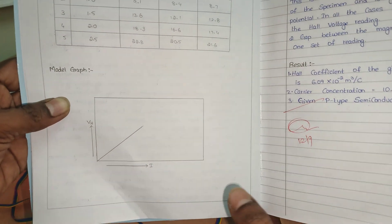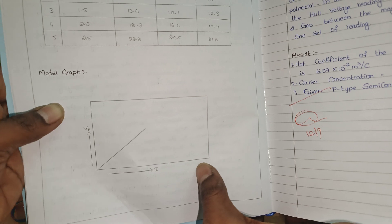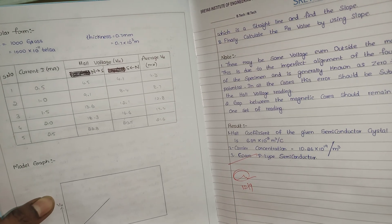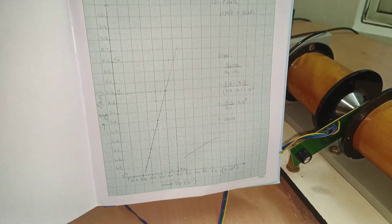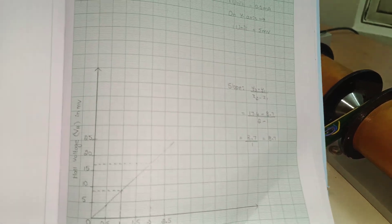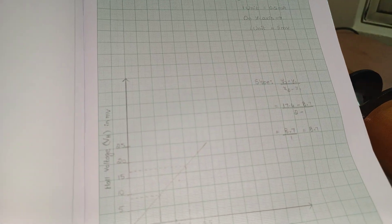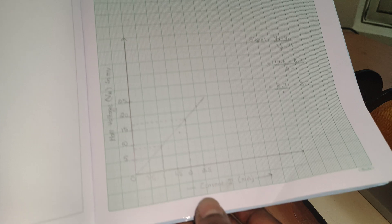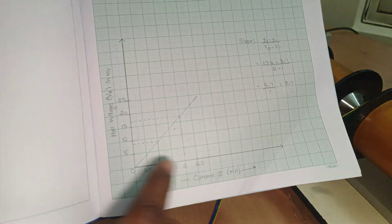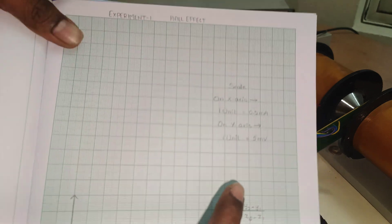This is the model graph. Here current we have to take on x-axis, Hall voltage on y-axis. Now I will show you the graph. This is the graph of Hall voltage versus current: current on x-axis, Hall voltage on y-axis. This is the scale.